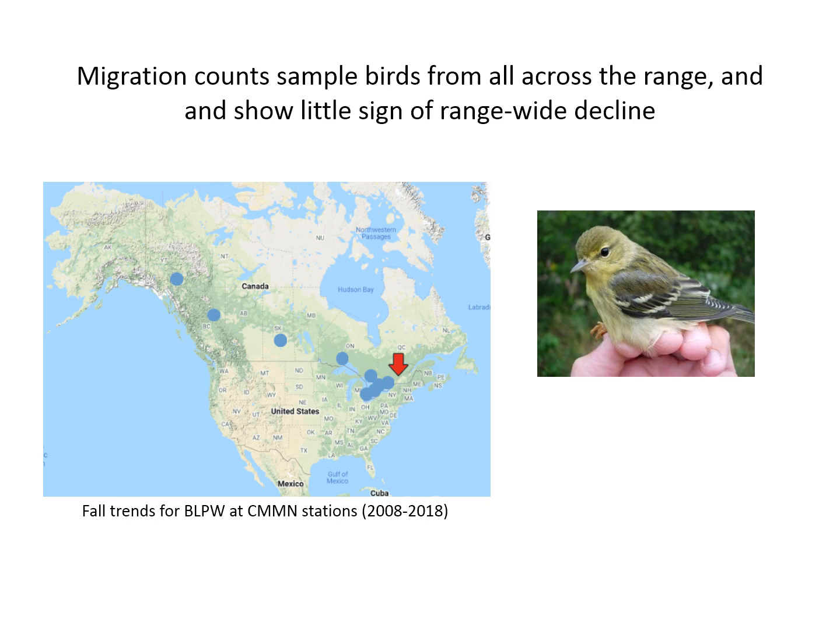The blue dots here indicate migration monitoring stations that have recorded no significant change in Blackpoll populations over the past 10 years, and there's only one station in eastern Canada showing a big decline. It was this discrepancy between migration count trends and the BBS trends that made us choose Blackpoll Warbler as a sample species for comparing migration and BBS trends.